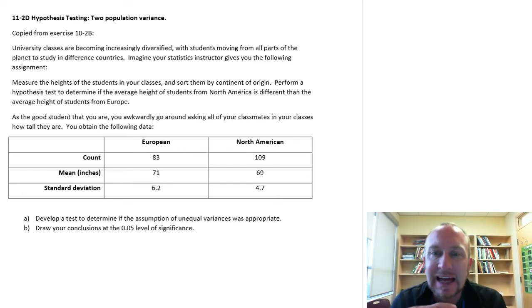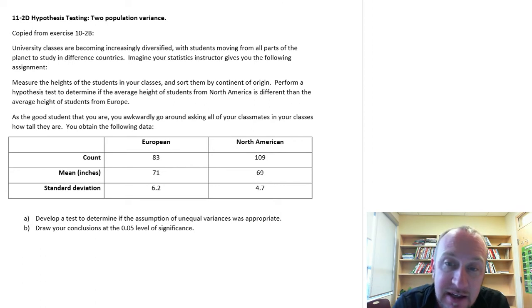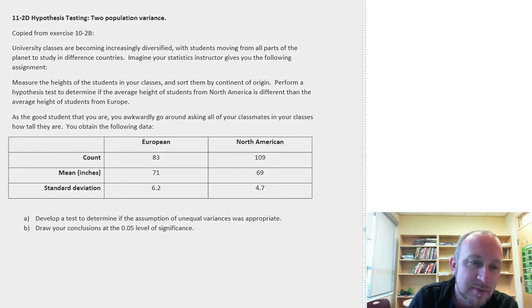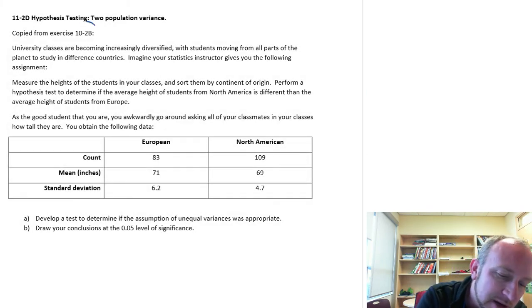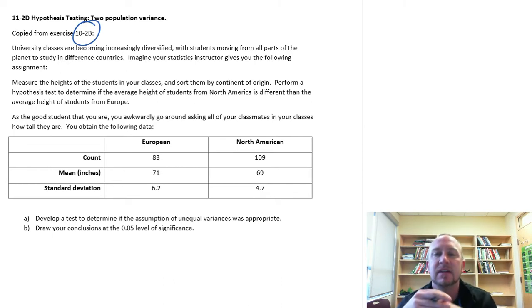Hello and welcome to this last exercise in module 11. This is going to be another test on two population variances, and as you can see I've stolen another problem from a previous module. Here we're looking at a problem from exercise 10-2B.